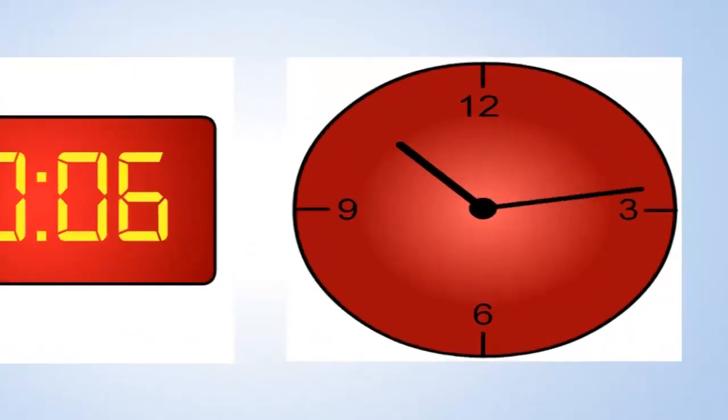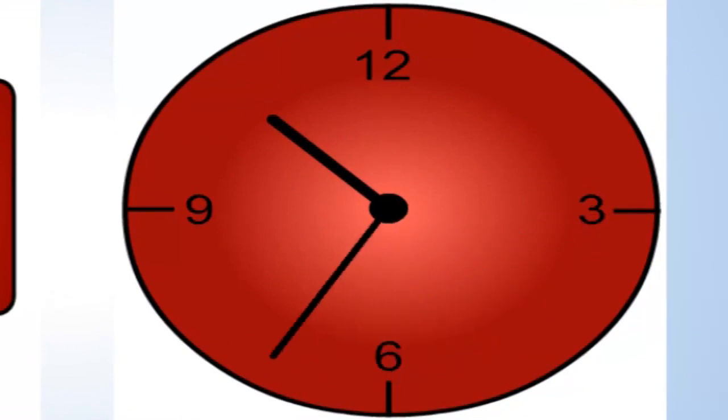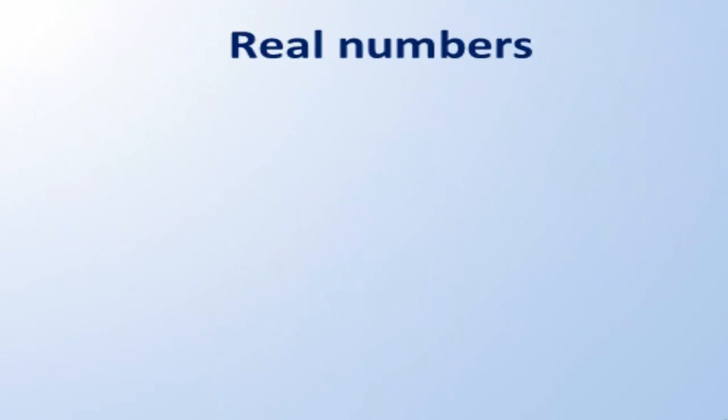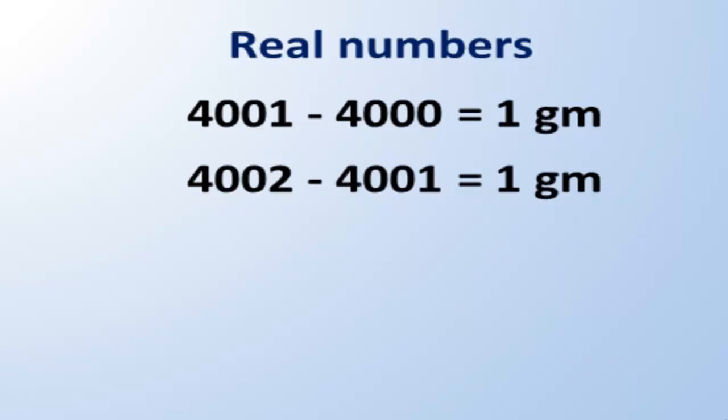In the same way, weight is a continuous variable because the values form a continuum. Weight doesn't increase in steps of one gram. Because they can be properly measured, the data are real numbers. In contrast to ordinal values, the difference between any pair of adjacent values - say 4000 grams and 4001 grams - is exactly the same as the difference between 4001 grams and 4002 grams.